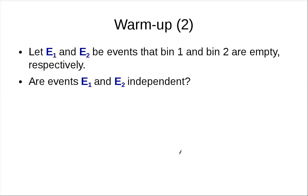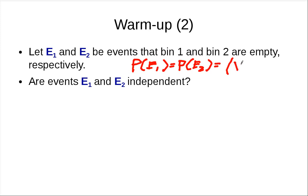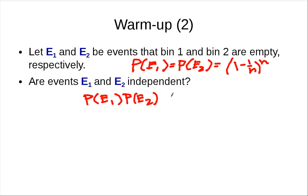Now we know that P(E1) equals P(E2) equals (1 minus 1/n) to the n. The next question is: are these two events independent? To check independence, we need to verify whether P(E1) times P(E2) equals P(E1 intersection E2). So we need to figure out the probability that both bins are empty.